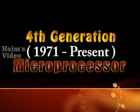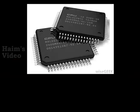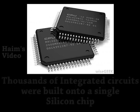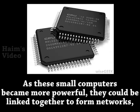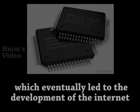4th Generation: From 1971 to present — Microprocessor. Thousands of integrated circuits were built onto a single silicon chip. As these small computers became more powerful, they could be linked together to form networks, which eventually led to the development of the internet.